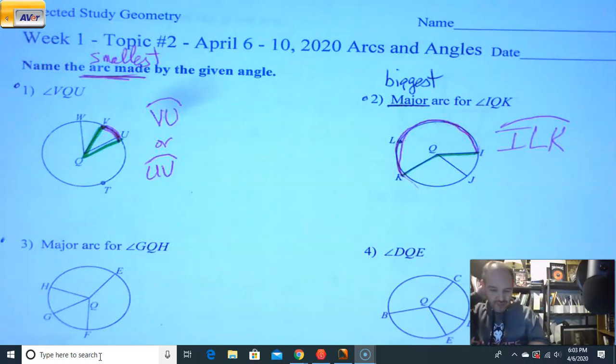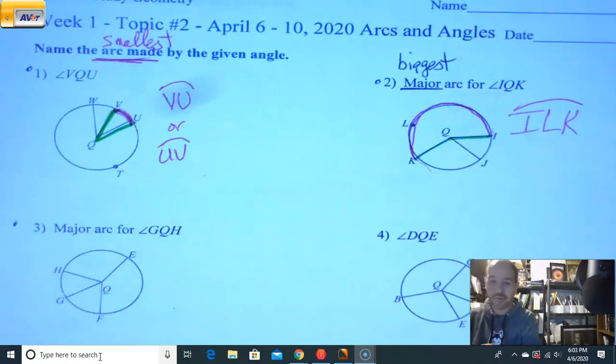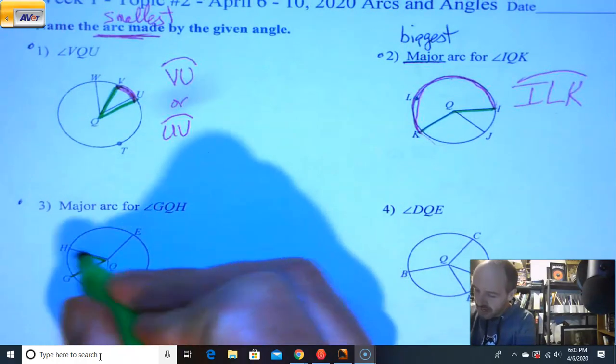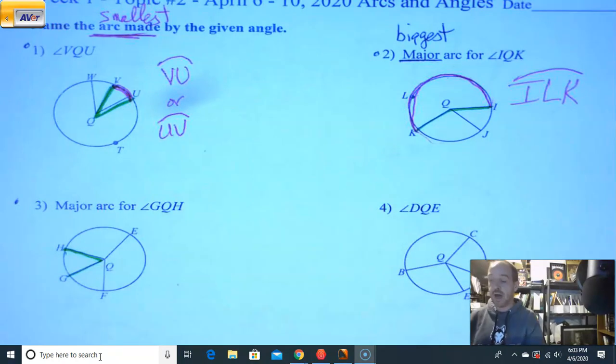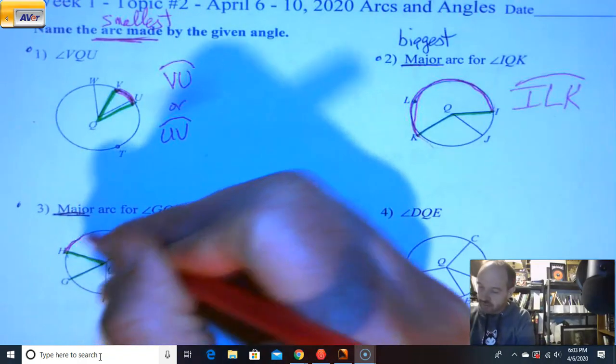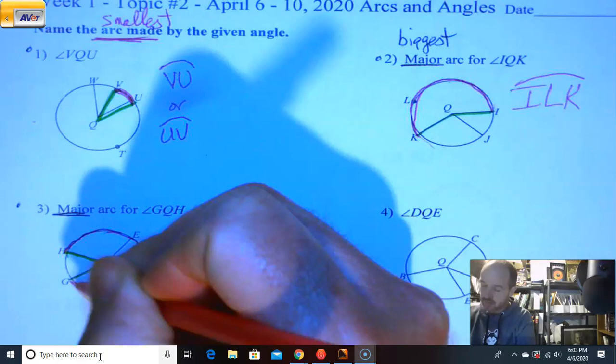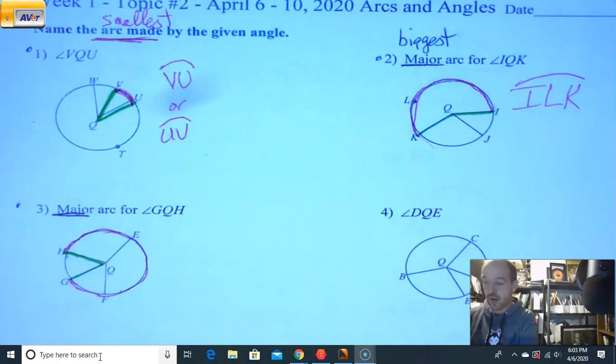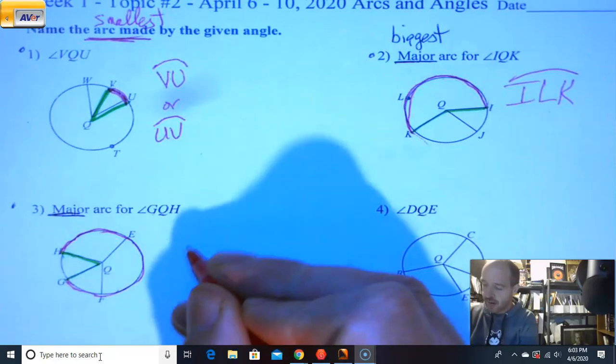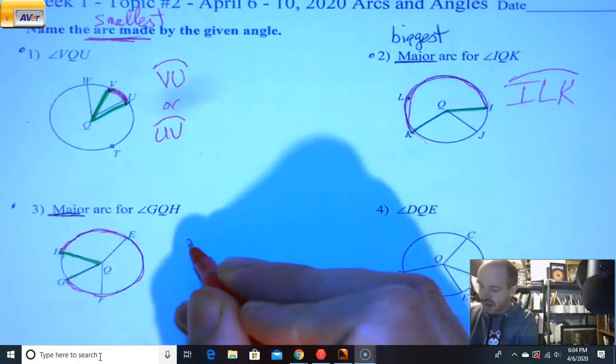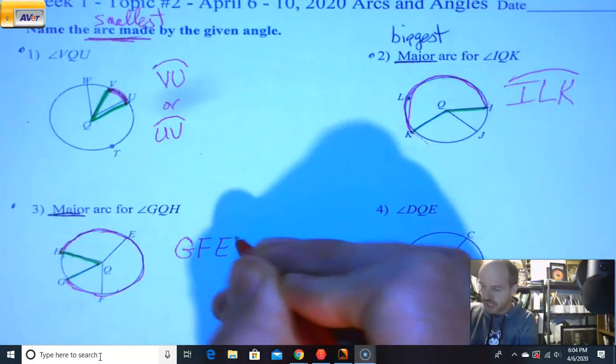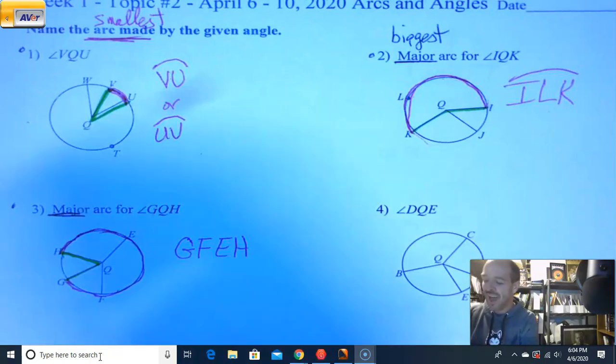So one more, just to make sure we got this idea of major arc set. Number three, major arc for G-Q-H. G-Q-H. Now normally, G-H would be my arc. But again, major means the bigger one. So we're going to take the long route. And we'll work our way around here. And again, pick the way you want to go. Normally, what I'll do is I'll start with whatever letter they started with here. So here for my arc, I got, let's see here. Now, do I have to write G-F-E-H because there's every single one in there? Not really. I mean, would it be wrong?